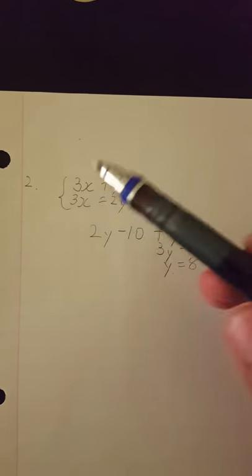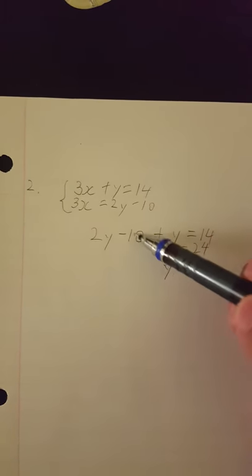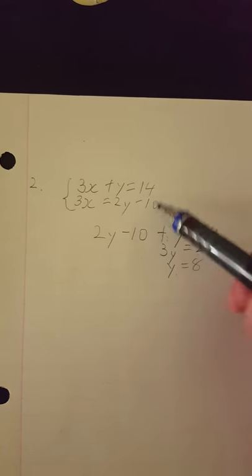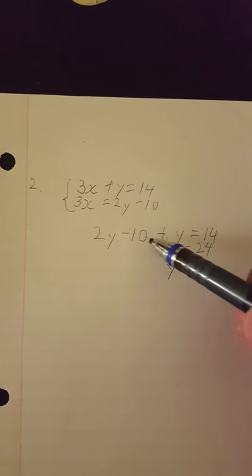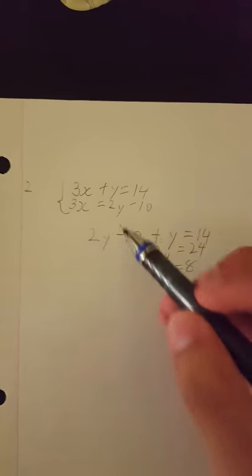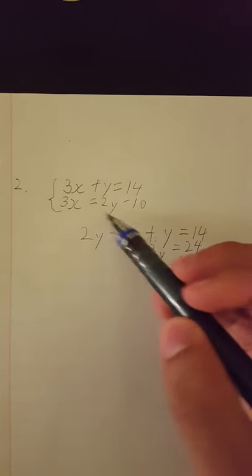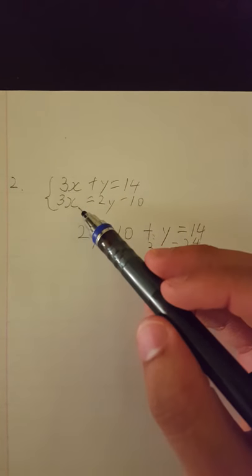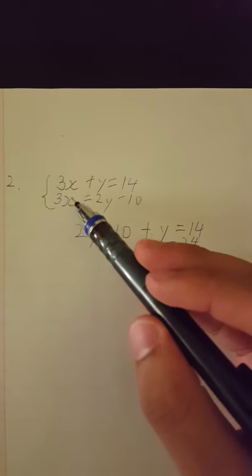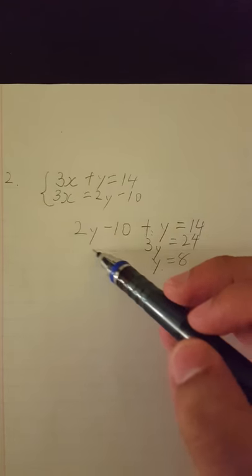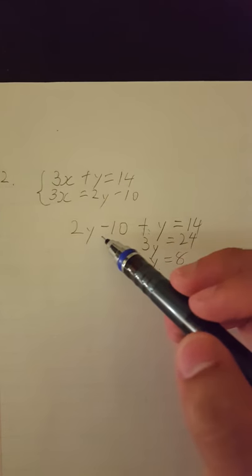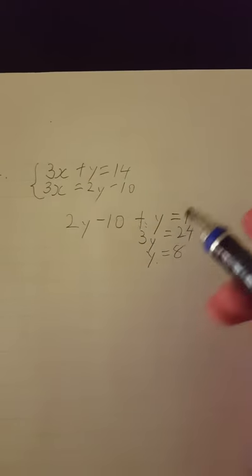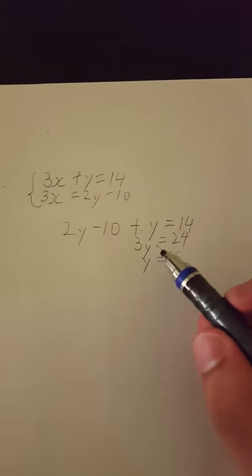This is number two. To get this, we add both of these and then we get this. We plug three x up right here and we get 2y minus 10 plus y equals 14.